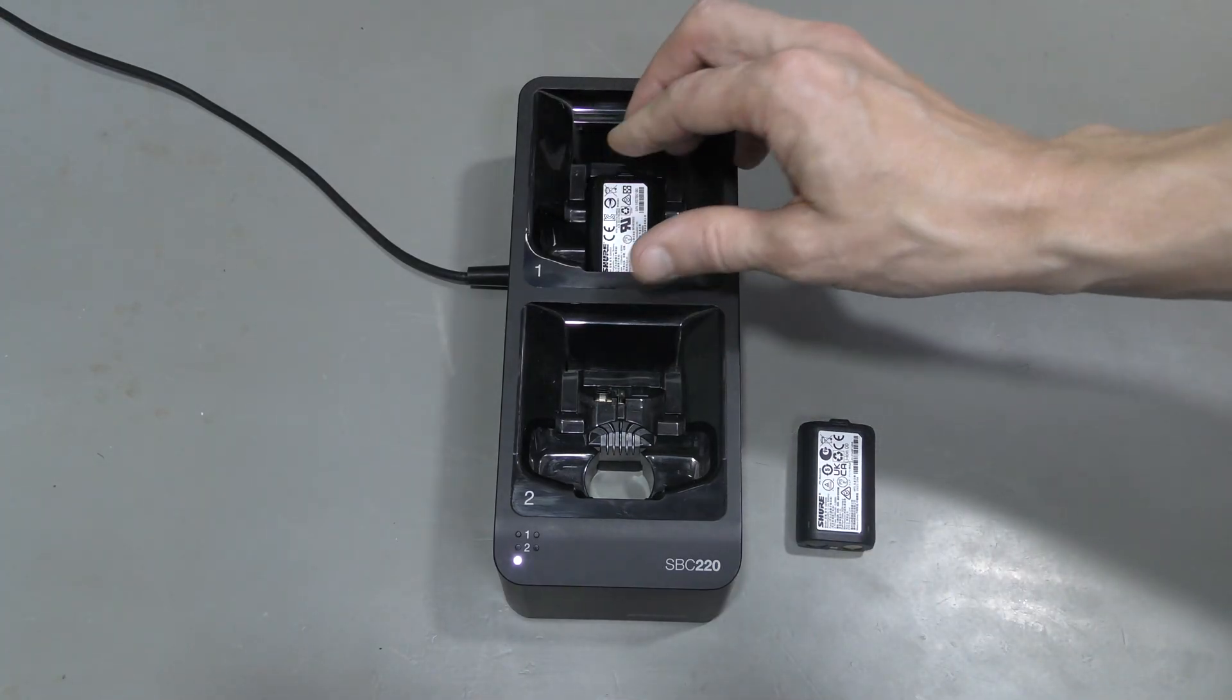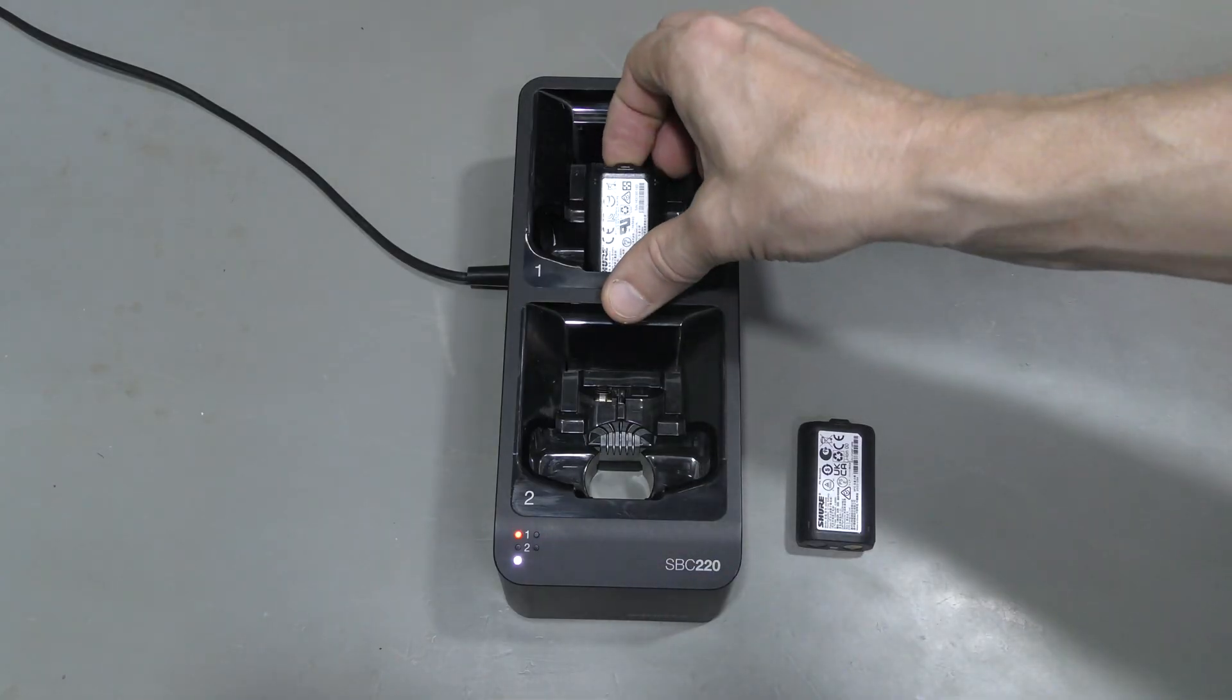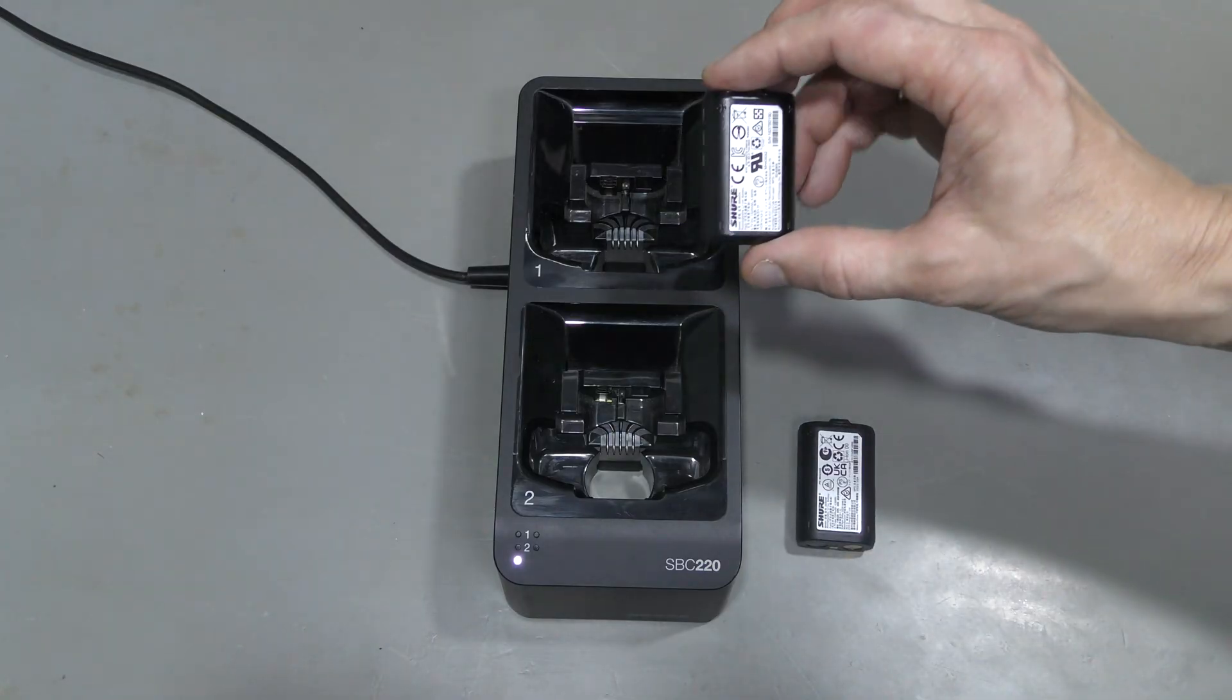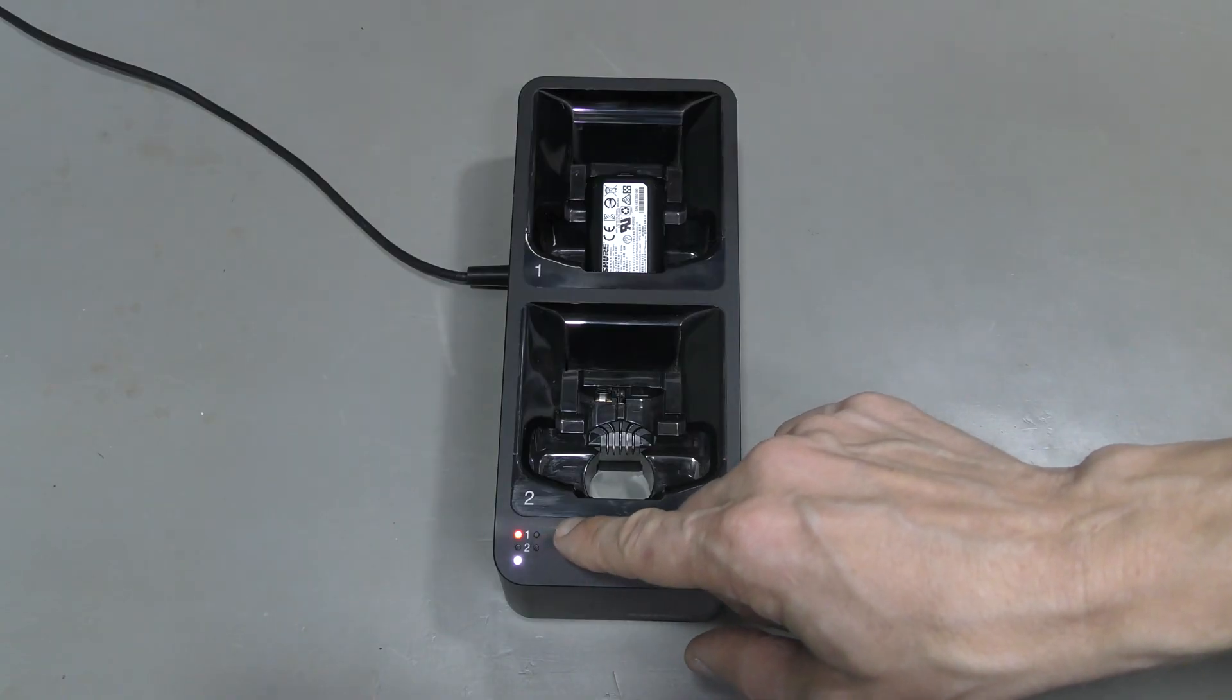In this episode let's have a look at this Shure lithium-ion battery that does not charge. Here I have a good battery. Let's put it into this charger. Charging light comes on, no problem.